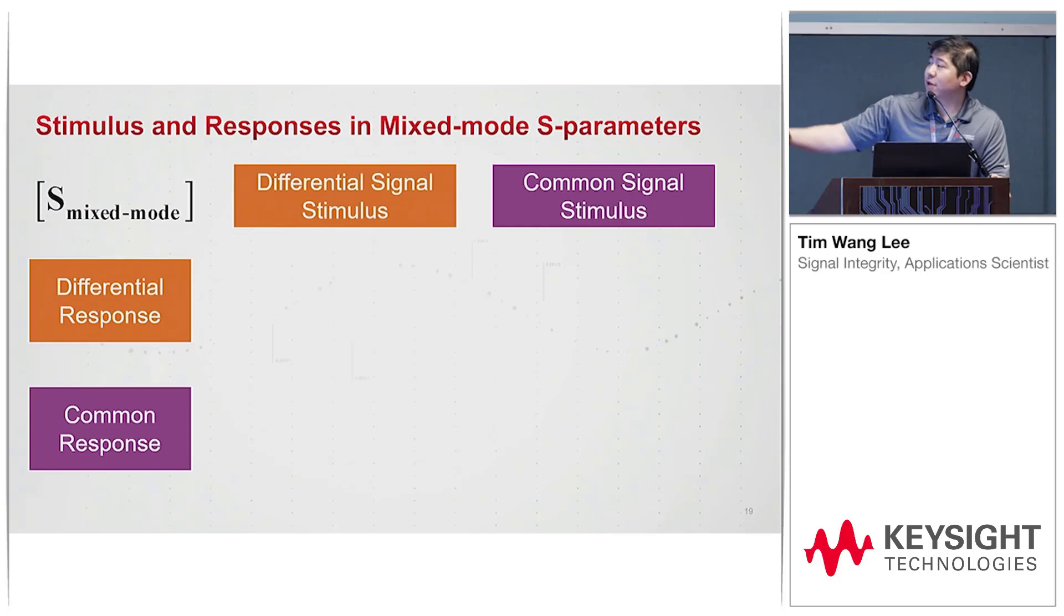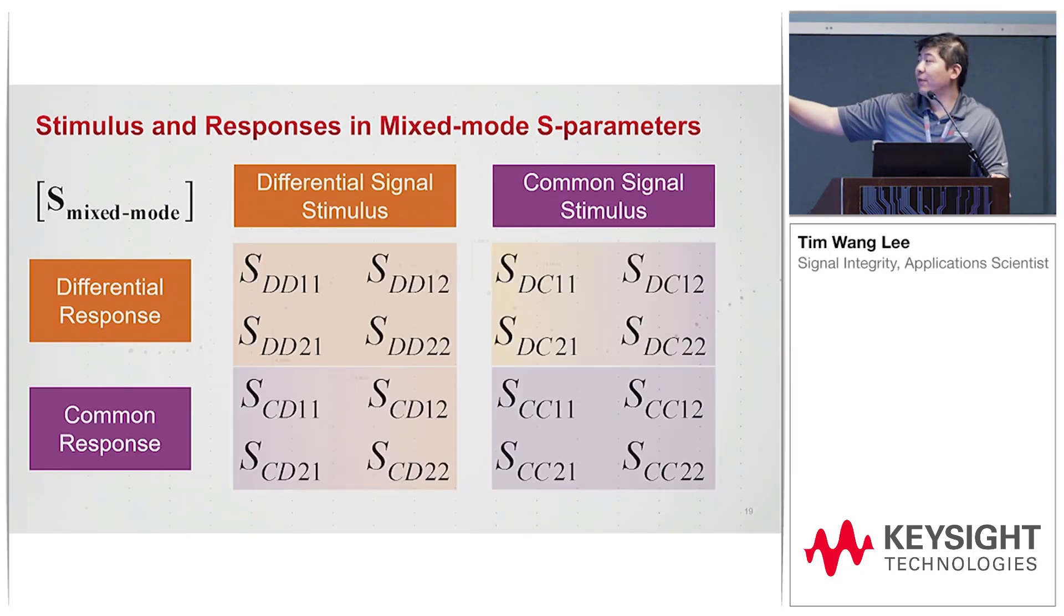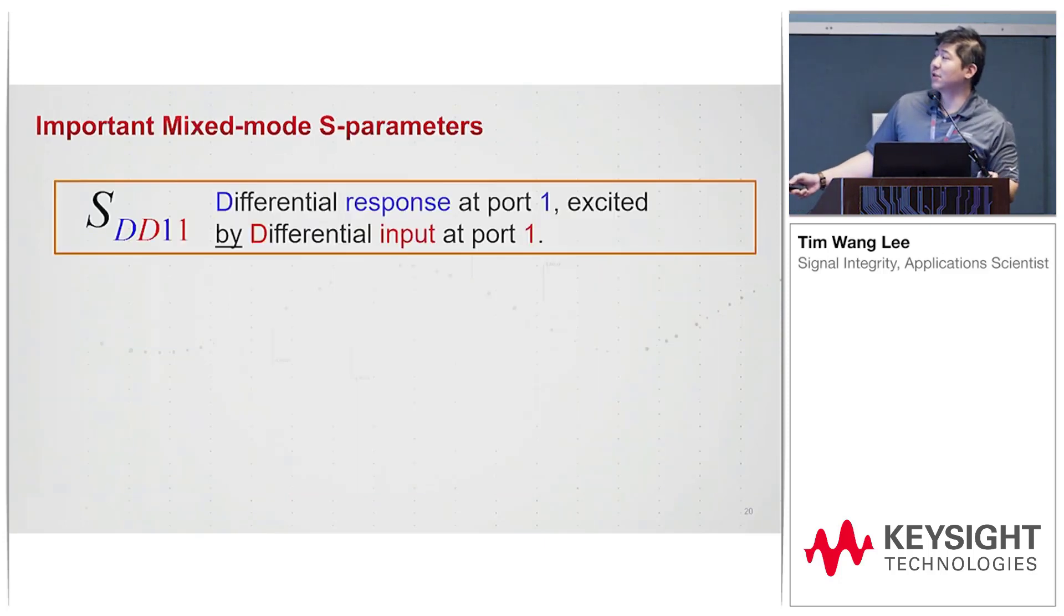We have differential signal stimulus on the top, common on the top, differential response on the left. So there are 16 distinctive S-parameters, and each one of them is a complex number. That's 16 times 2, so that's many numbers. But it's good news: focus on mostly these four.